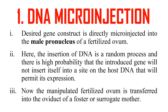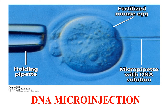We manipulate the fertilized ovum and transfer this manipulated fertilized ovum into the oviduct of the surrogate mother for the production of the transgenic animal. In this picture, you can clearly see that we use a holding pipet which holds the ovum, and then with the help of a micropipet containing the DNA gene construct, this DNA is directly injected into the male pronucleus to carry out transgenesis.